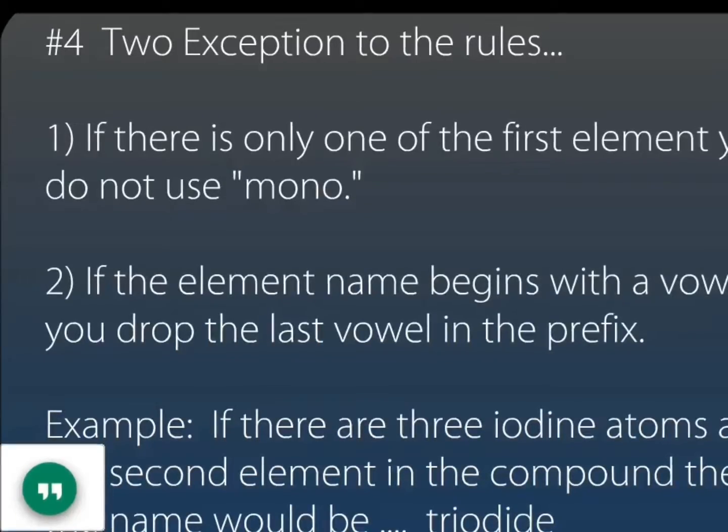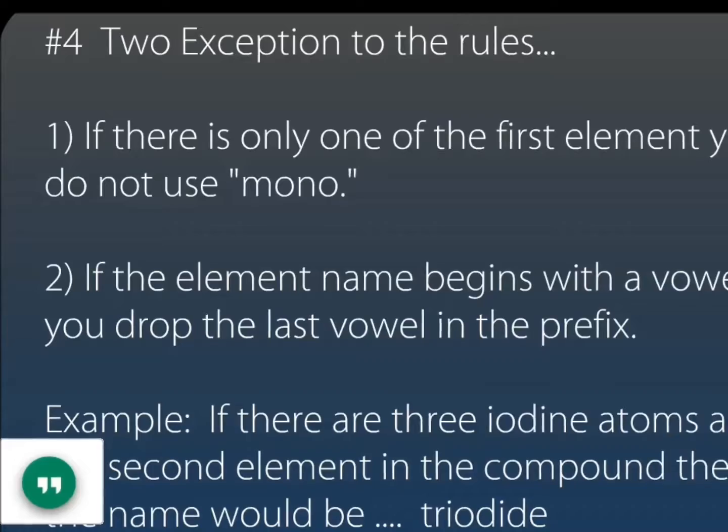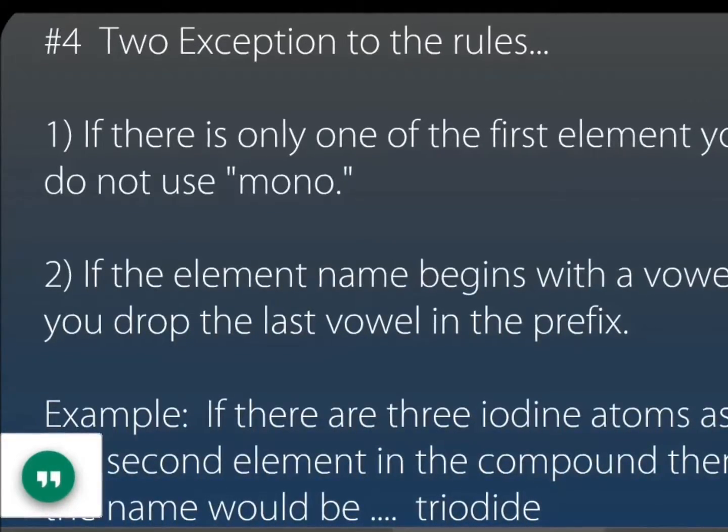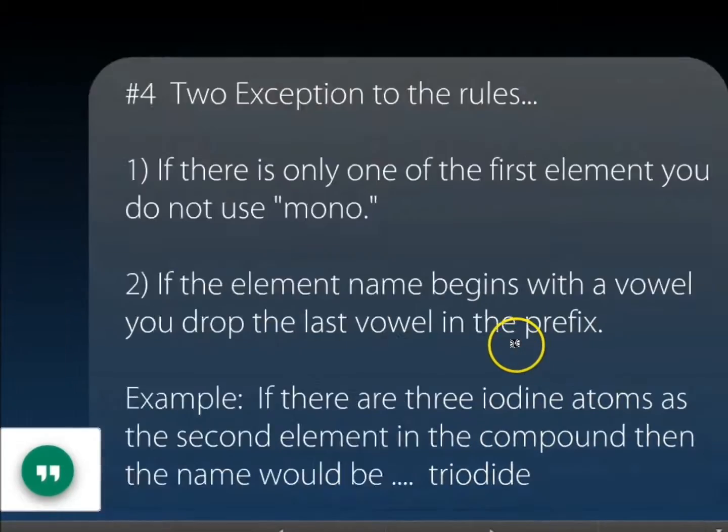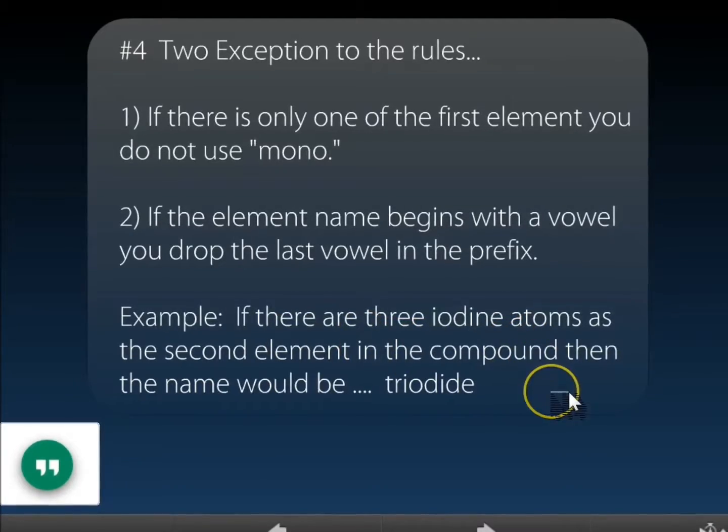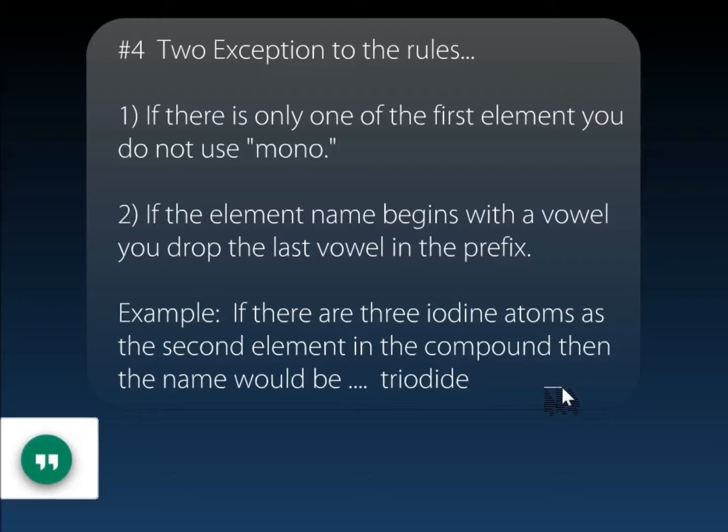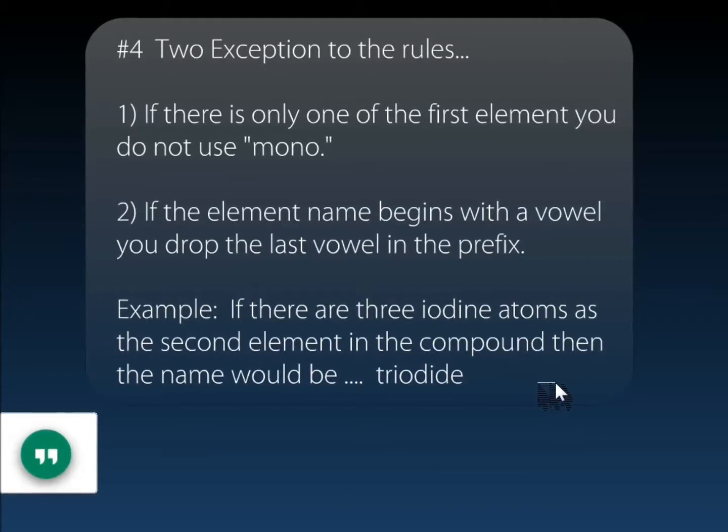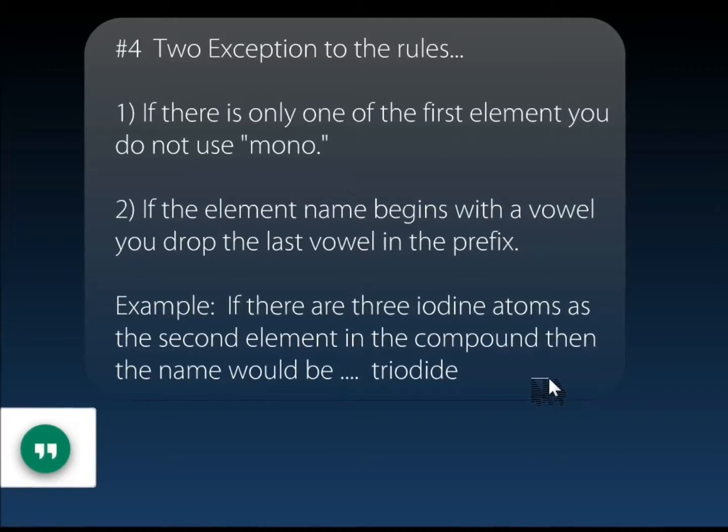And this one's a little weird but you'll get the hang of it: if there's an element name beginning with a vowel, you drop the last vowel in the prefix. Here's an example of that: if there are three iodine atoms in the second element, then it would be tri-iodine. We wouldn't put two i's in there.